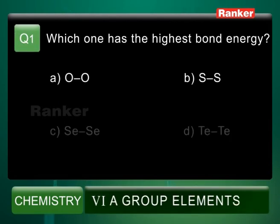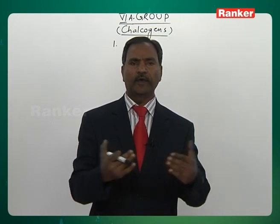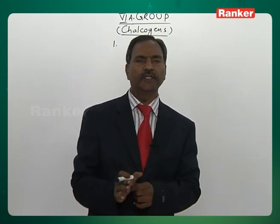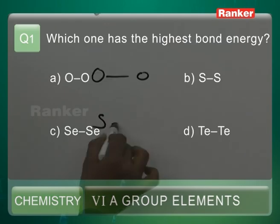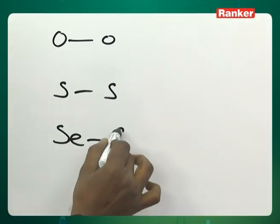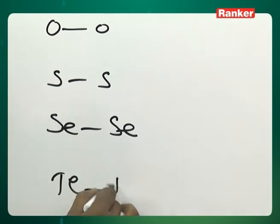Question number 1: Which one has the highest bond energy among the Chalcogen atoms? The options are: A) O–O (oxygen to oxygen), B) S–S (sulphur to sulphur), C) Se–Se (selenium to selenium), D) Te–Te (tellurium to tellurium).